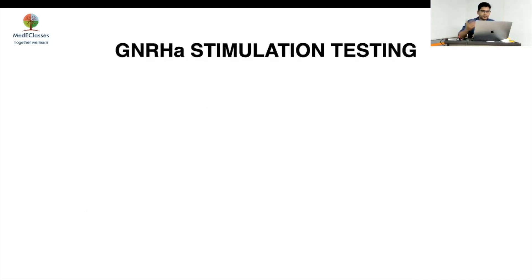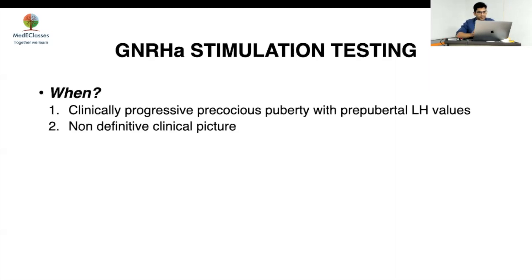When to do a GnRH stimulation test: with the introduction of ultra-sensitive chemiluminescence assays, 0.2 is a very good marker. However, stimulation testing should be considered in two situations: first, when there is clinically progressive precocious puberty but with pre-pubertal LH values; and second, when the assay being used is unknown and the picture is non-definitive — for example, values of 0.1–0.2 or 0.2–0.3 — but the child has progressive puberty with advanced bone age.